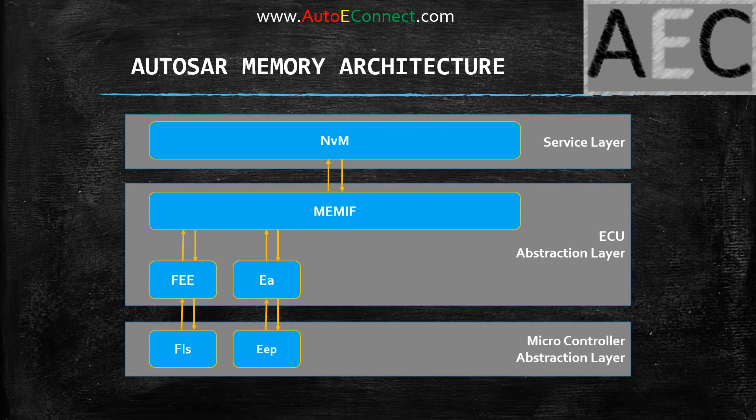In pictorial format: NVM is the service layer module offering services to the application layer above and to all other service modules like DCM, DEM, and BSWM. NVM uses the MemIf abstraction of FE and EA in the ECU abstraction layer. FE is responsible for abstraction of the FLS driver, and EA is responsible for abstraction of the EEPROM driver — both present in the microcontroller abstraction layer. So: service layer contains NVM; abstraction layer contains MemIf, FE, and EA; and the microcontroller abstraction layer contains the FLS and EEPROM drivers.